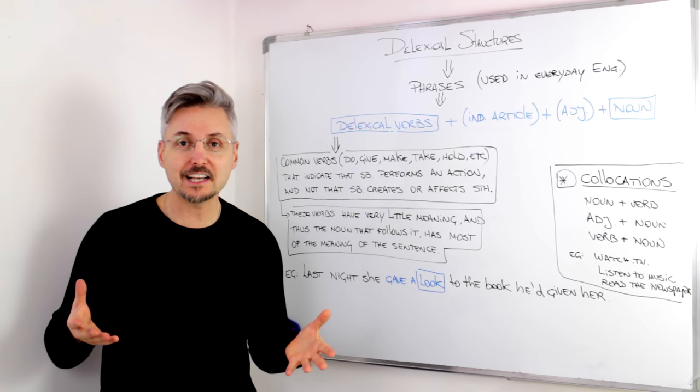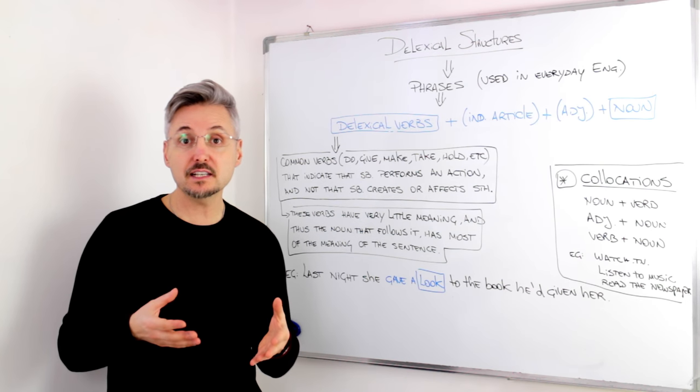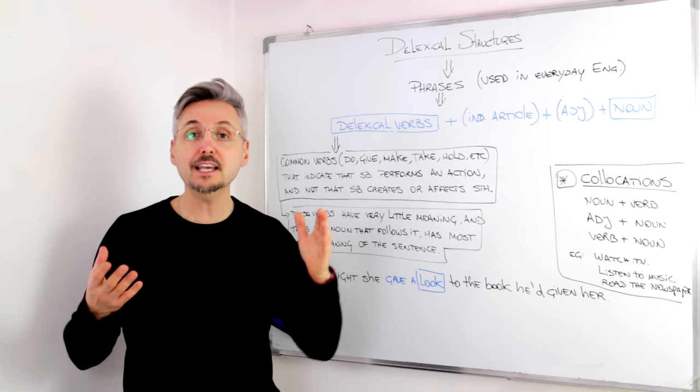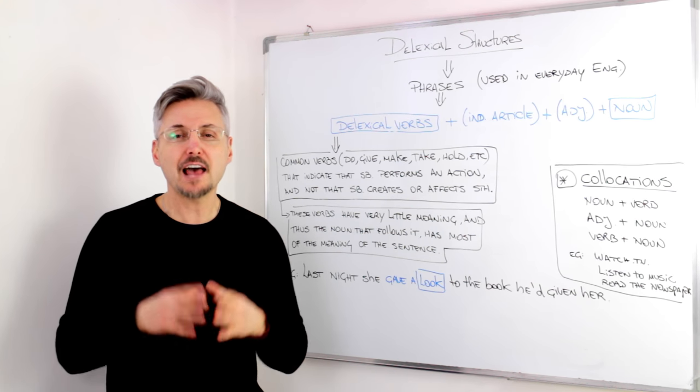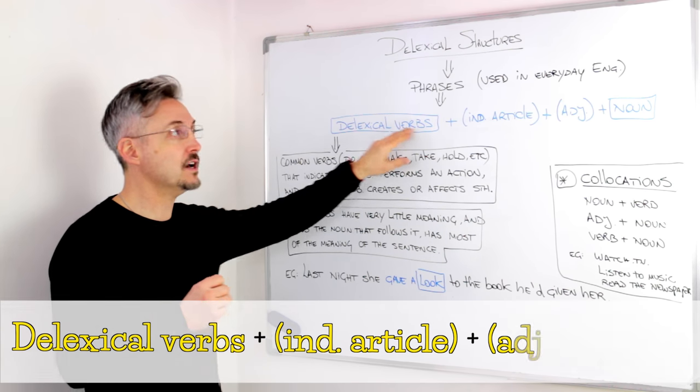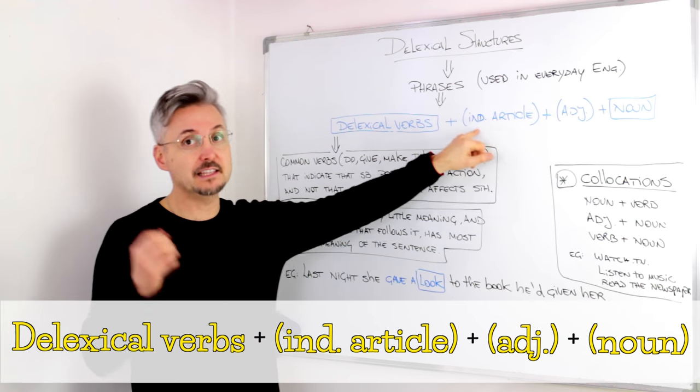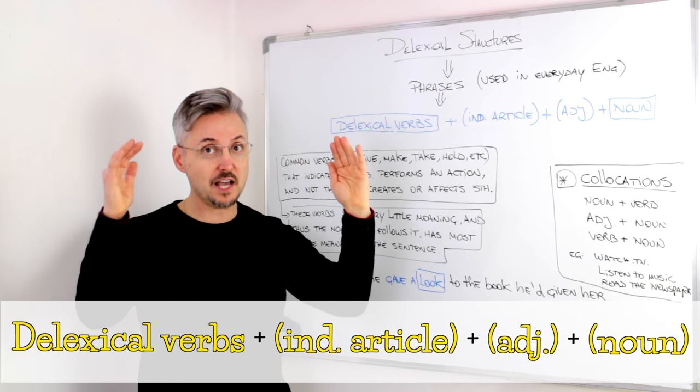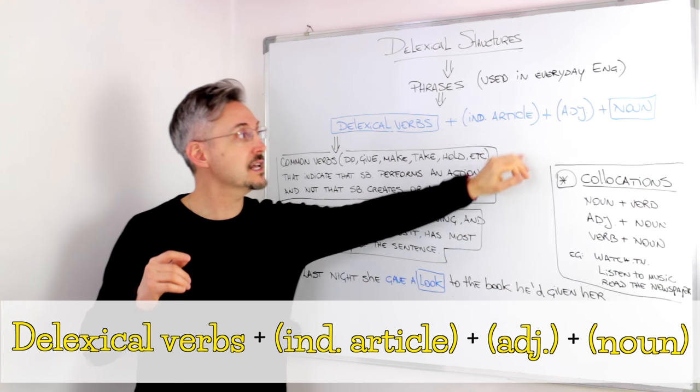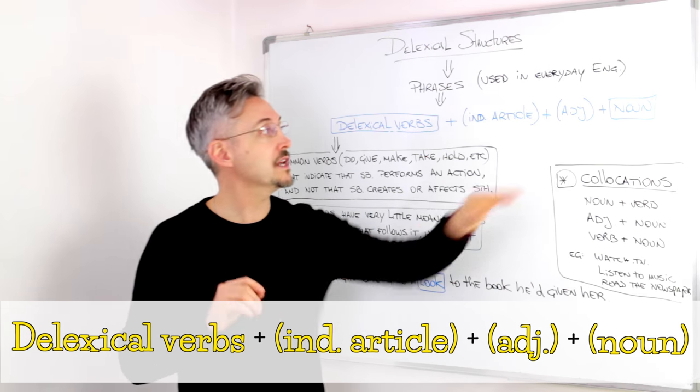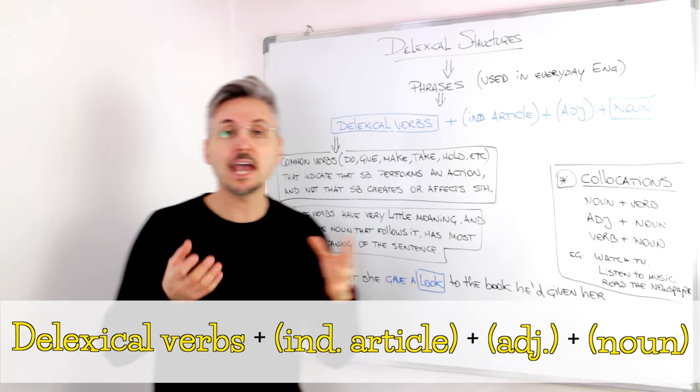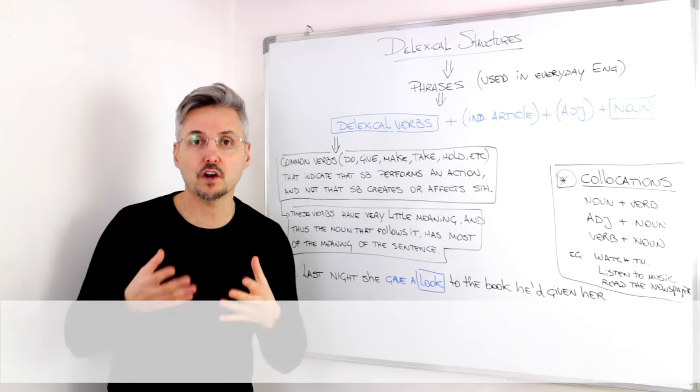So what are the lexical structures? They are phrases that are used mainly in everyday English. And they are made up of the lexical verbs, plus indefinite article, sometimes, so that's why it's in brackets, plus adjectives, sometimes, plus a noun.